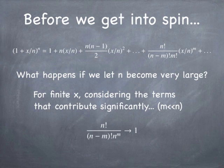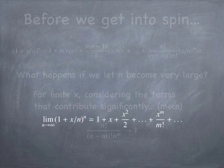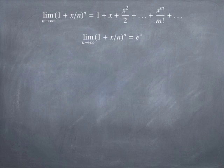As n becomes large, smaller and smaller values of m become important. So you take the limit as n approaches infinity and the sum reduces to what looks like a Taylor series. What we end up with is nothing other than the exponential — in other words, the Taylor series is just the exponential function.